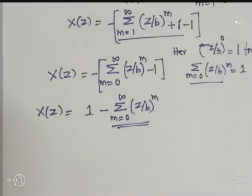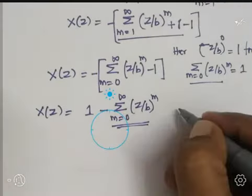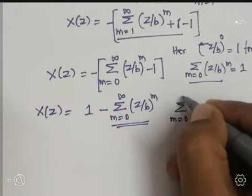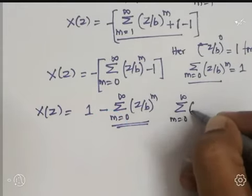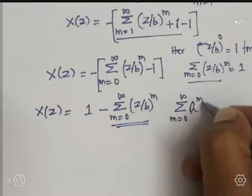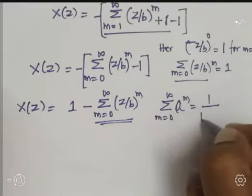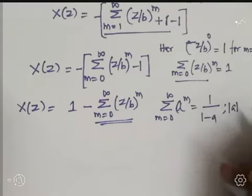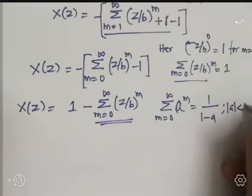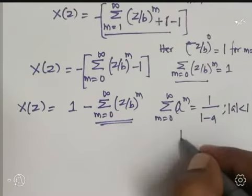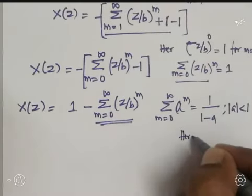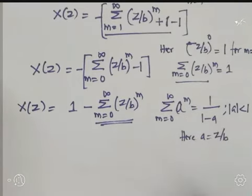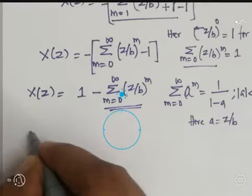Using the geometric series formula: summation from M = 0 to ∞ of a^M = 1/(1−a), valid only when |a| < 1. Here a = Z/B, so the condition is |Z/B| < 1.